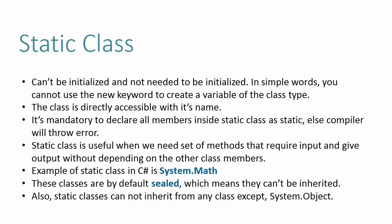It is mandatory to declare all members — fields, properties, or constructors — inside a static class as static, otherwise the compiler will throw an error. We specify a class as static when we need a set of methods that take input and give output without depending on other class members. The best example in C# is the System.Math class, which performs arithmetic operations by taking input and presenting output.